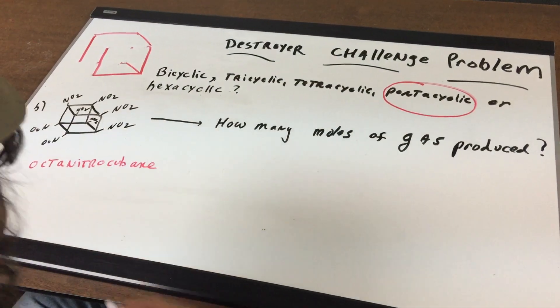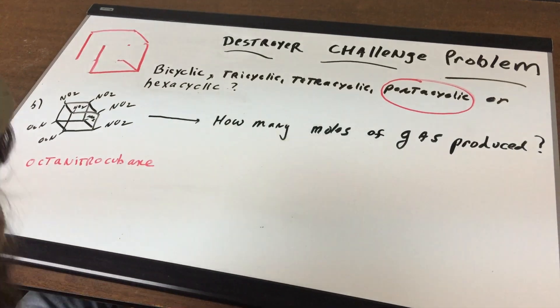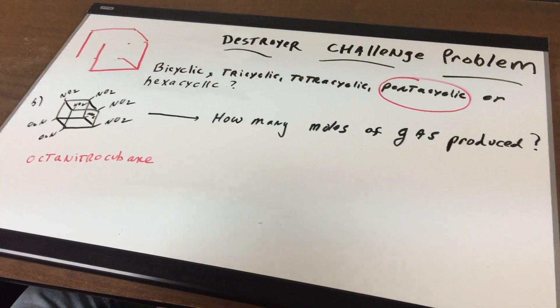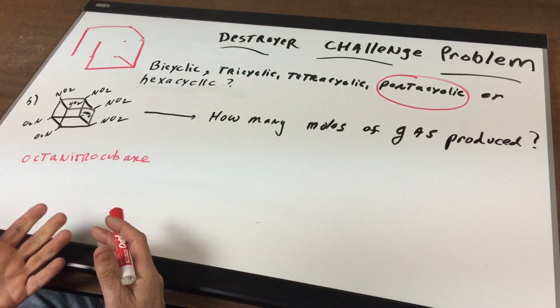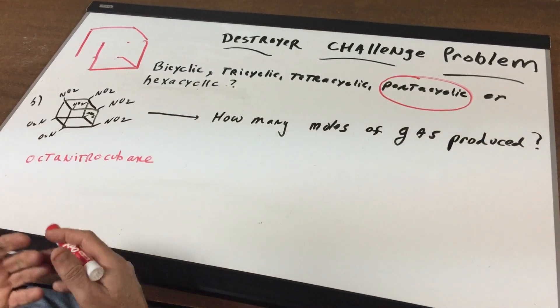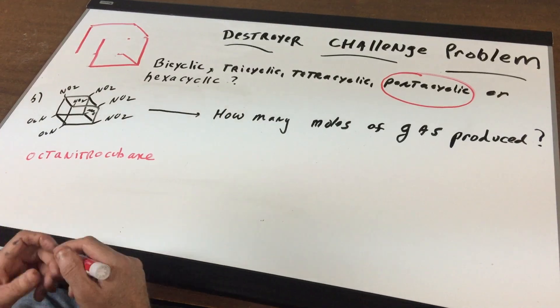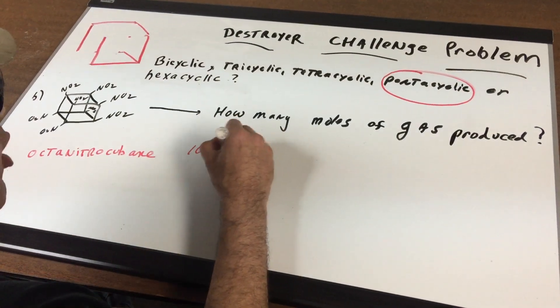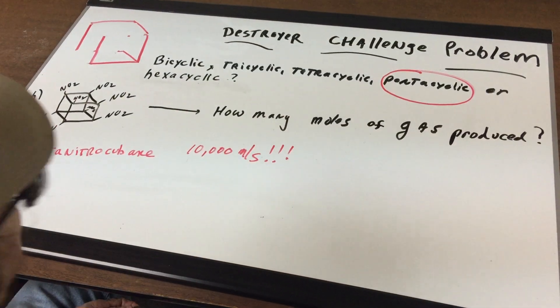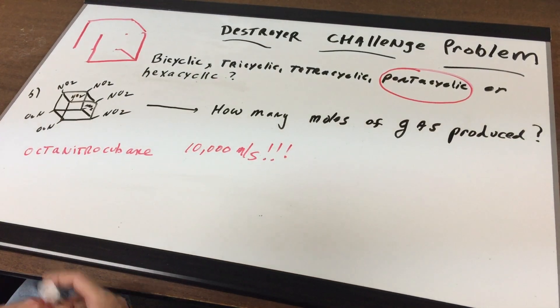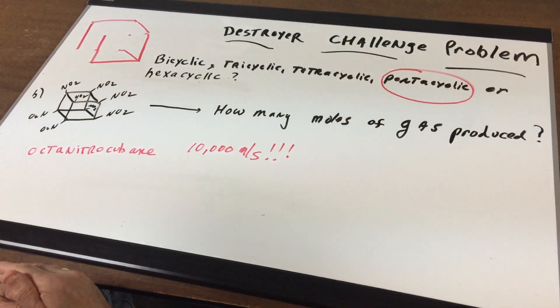And if you don't know, you know it now, this is one of the most explosive chemicals on planet earth. It's so explosive that it's going to give a lot of gases and those gases can reach over 10,000 meters per second. That's a fast gas molecule. So the question is how many moles of gas is produced?